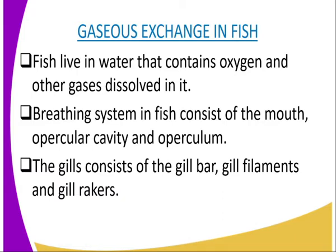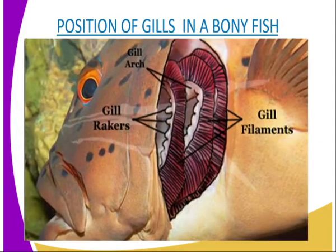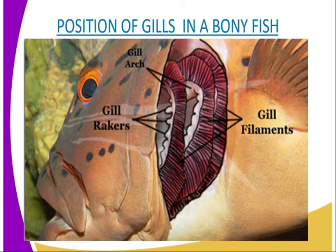The breathing system of a bony fish consists of the mouth, the buccal cavity, the gills, the opercular cavity, and also the operculum, as we can see in the diagram on our screen.